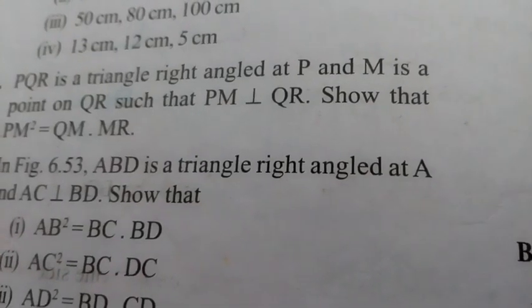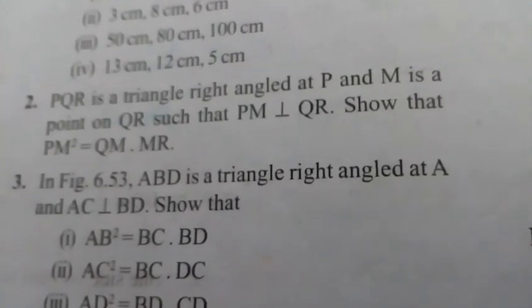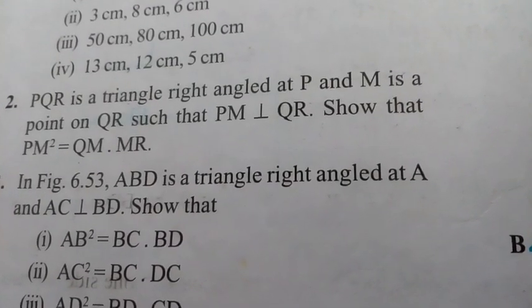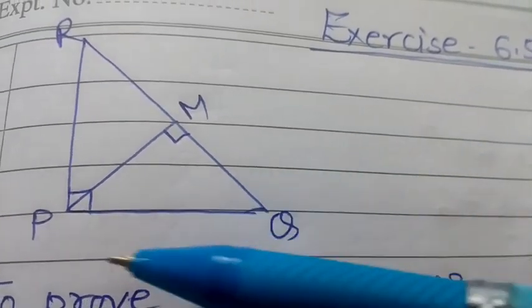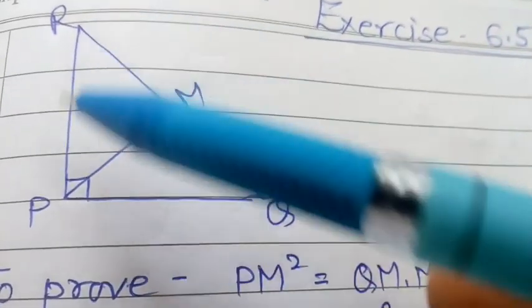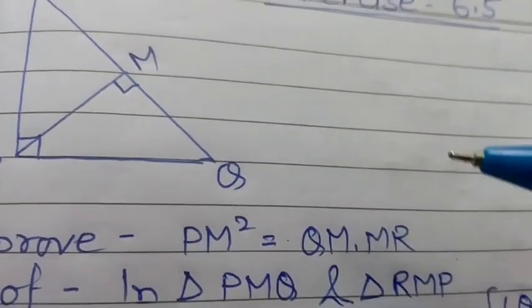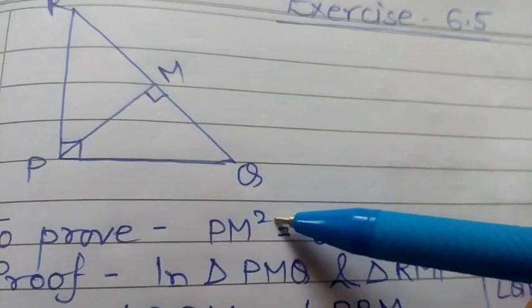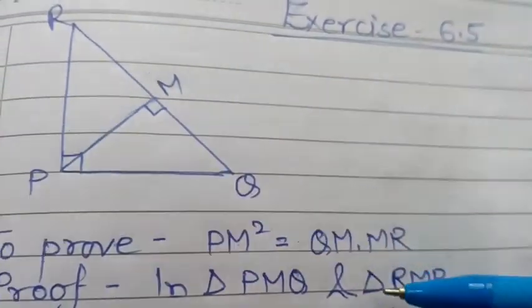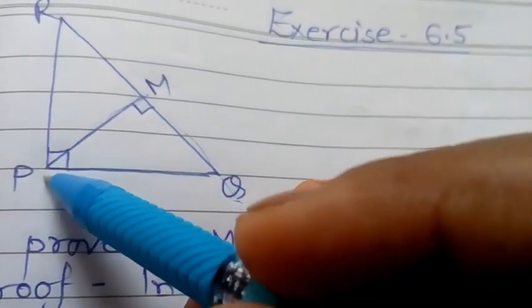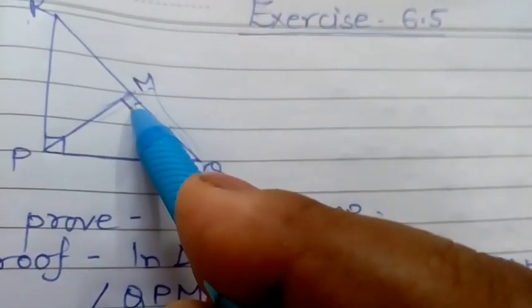Question number 2: PQR is a triangle with a right angle at P, and M is a point on QR such that PM is perpendicular to QR. We have to prove that PM² = QM × MR. First, we consider the two triangles PMQ and PMR, noting that angle M equals 90 degrees in both.